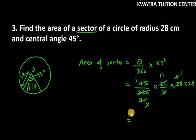So you are left with 11 into 28 and 11 into 28 is 308 centimeter square. So required area of sector in this case is 308 centimeter square.